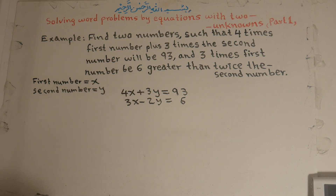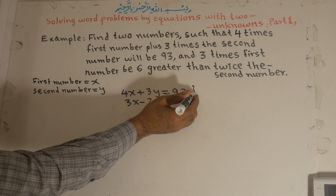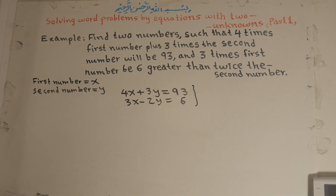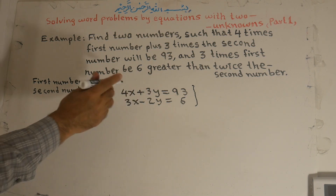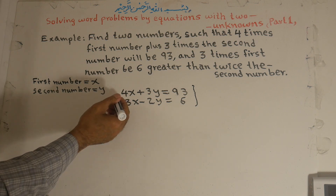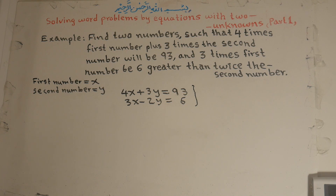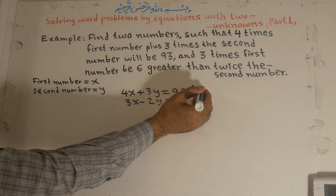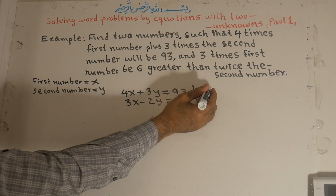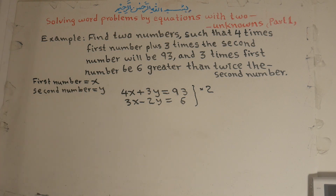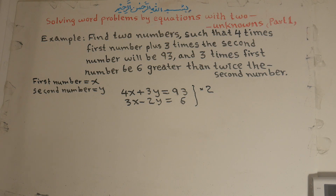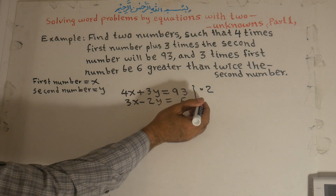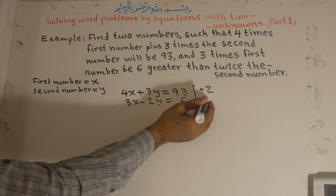Now we solve these two equations using the method of elimination. We eliminate Y because the signs are opposite — one positive and one negative. We multiply all of the first equation by the coefficient of Y in the second equation, which is 2, and we multiply all of the second equation by the coefficient of Y in the first equation, which is 3.